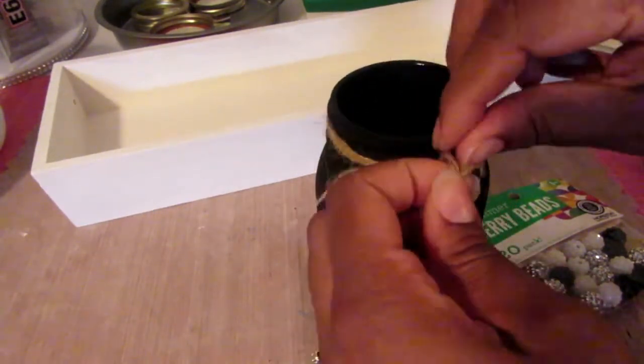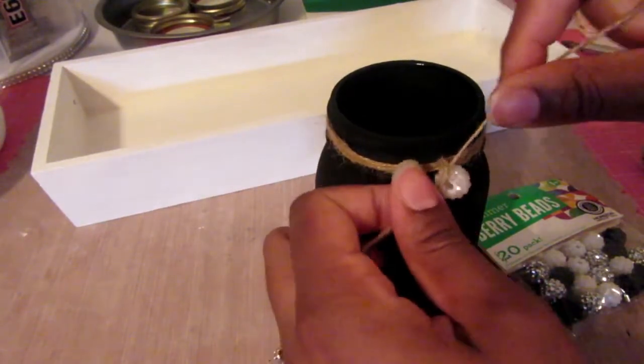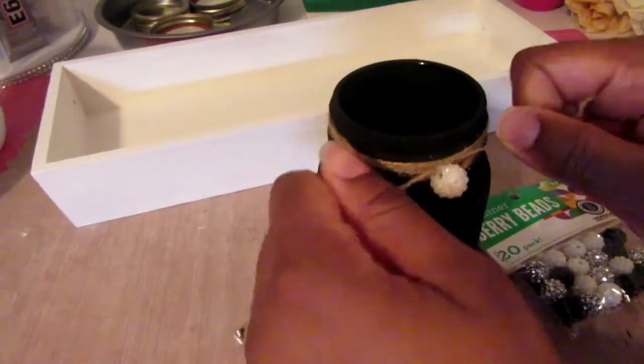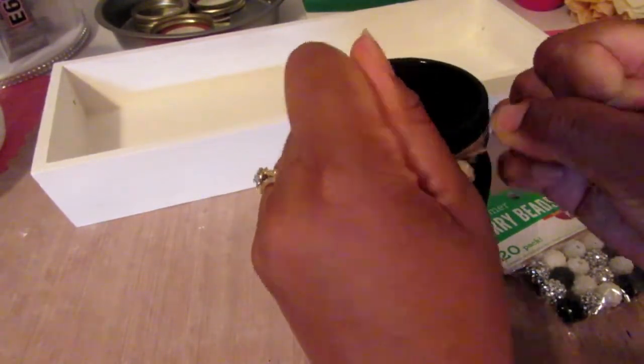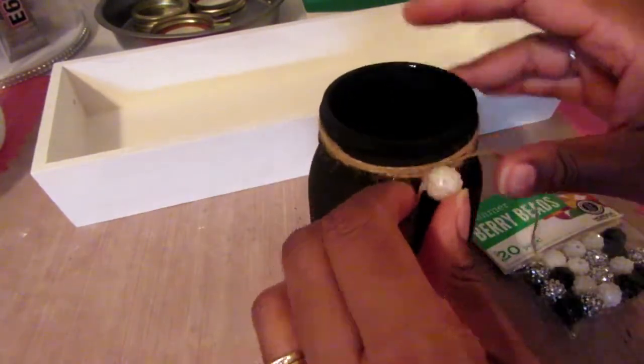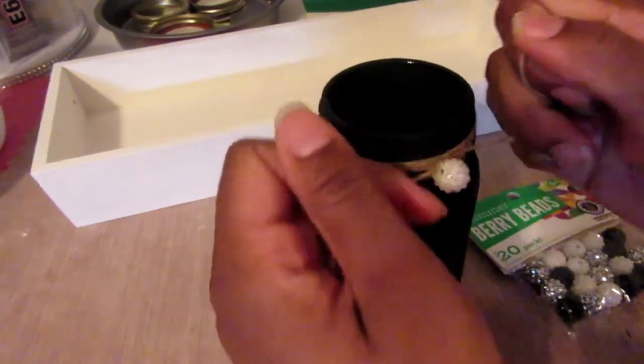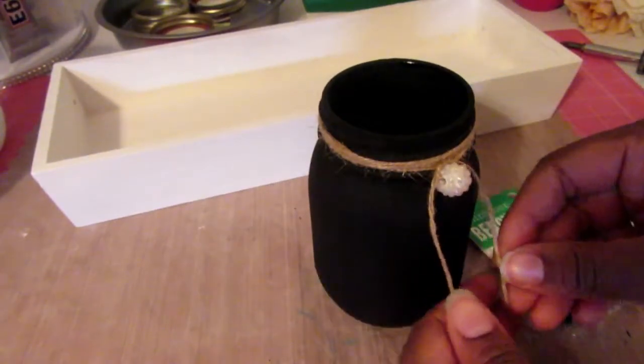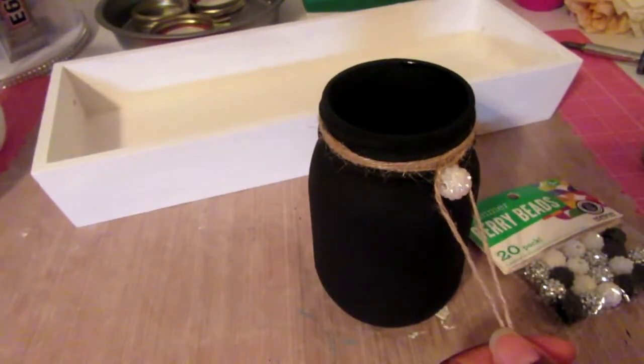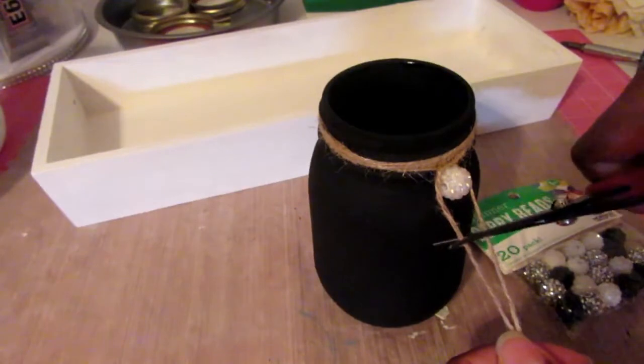I'm just going to tie this on here and take my scissors and cut off the twine. I'm just going to get it all straight and measured a little bit and then snip it off.